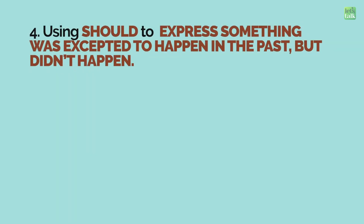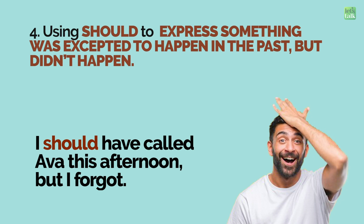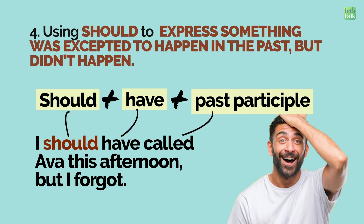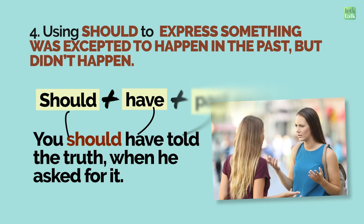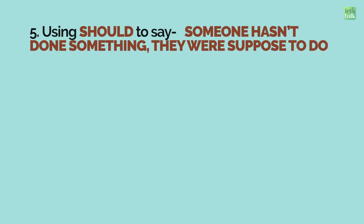The fourth use of Should is to express that something was expected to happen in the past but did not happen. 'I should have called Ava this afternoon, but I forgot.' In such sentences, we always use Should + have + past participle form of the verb. Here, 'called' is the past participle of 'call' — something you were to do in the past but forgot. 'You should have told the truth when he asked for it.' You can use Should to say someone hasn't done something they were supposed to do — in short, they haven't fulfilled an obligation.